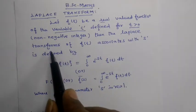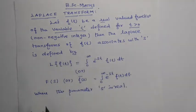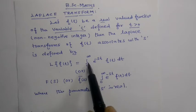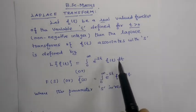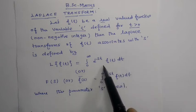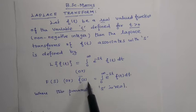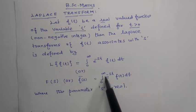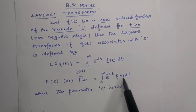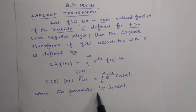The Laplace transform of f of t associated with s is defined by: L of f of t is equal to the integral over 0 to infinity of e to the power minus s t, times f of t, dt. This is the Laplace transform, also written as capital F of s, or f-bar of s, equal to the integral over 0 to infinity of e to the power minus s t, f of t, dt. Here s is the parameter.